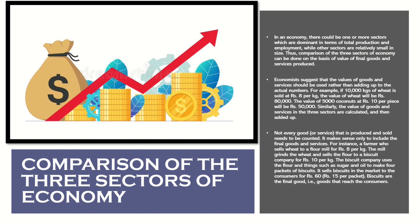Economists suggest that the values of goods and services should be used rather than adding up the actual numbers. For example, if ten thousand kilograms of wheat is sold at rupees eight per kg, the value of wheat will be rupees eighty thousand. The value of five thousand coconuts at rupees ten per piece will be rupees fifty thousand. Similarly, the values of goods and services in the three sectors are calculated and then added up.